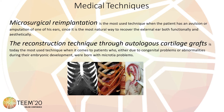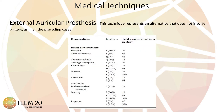The treatment of microtia consists of surgical techniques such as micro-surgical re-implantation and reconstruction techniques through autologous cartilage graft. But there is a third option: the external auricular prosthesis. This technique represents an alternative that does not involve surgery at all in the preceding case.